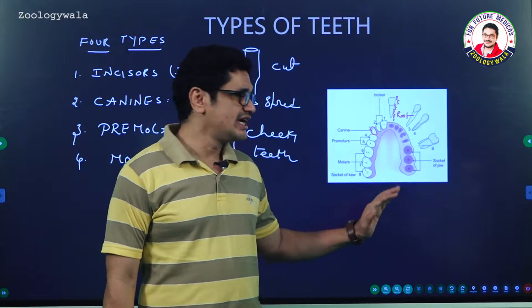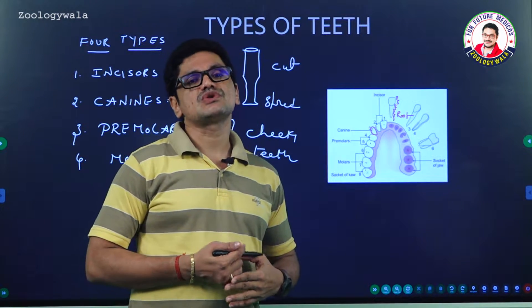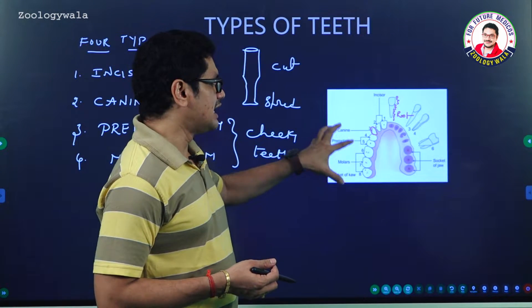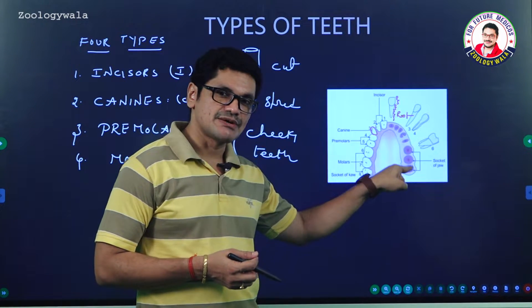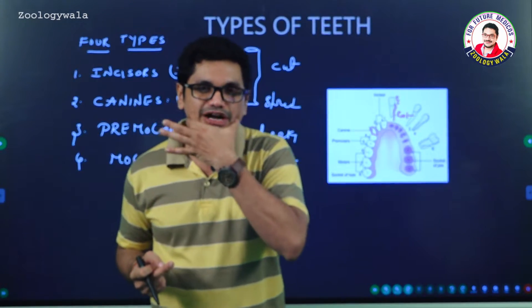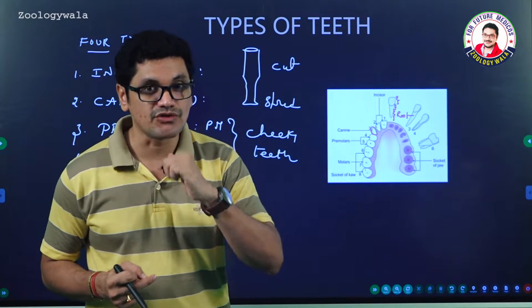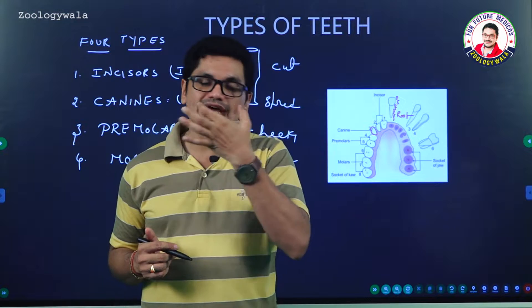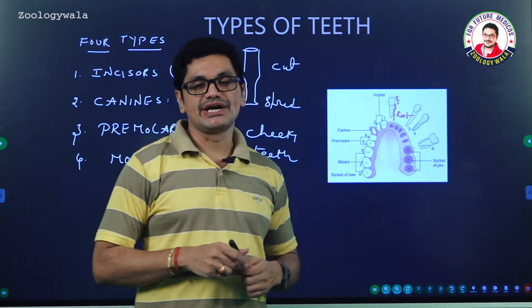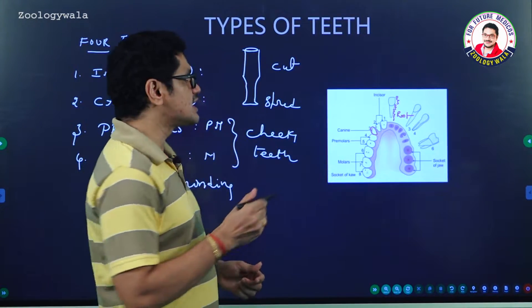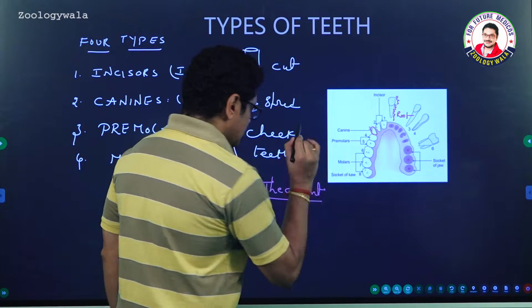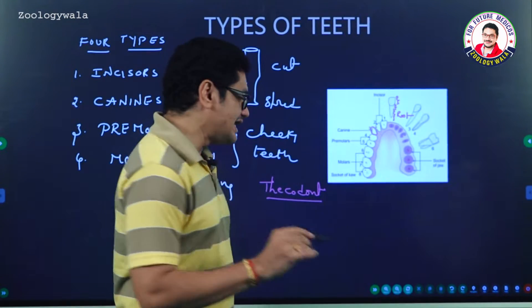This is the diagram given in the NCERT, and the same diagram may be asked during the examination — diagram-oriented questions may include correct labeling. Here you can see the sockets of the jaw bone. The upper jaw is the maxilla and the lower jaw is the mandible. The mandible is a U-shaped bone, the strongest facial bone among the 14 facial bones. Maxilla contains sockets over which the teeth are embedded. This is called thecodont dentition, seen in mammals.